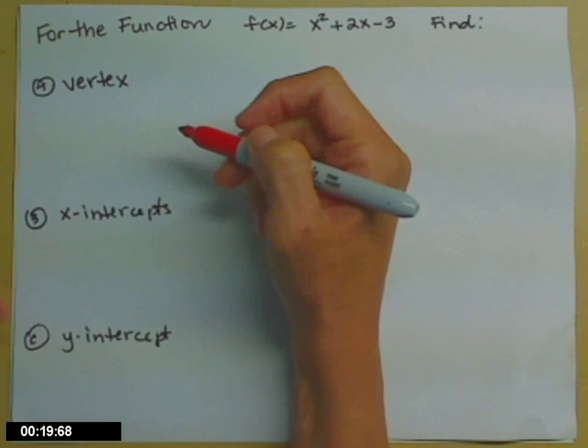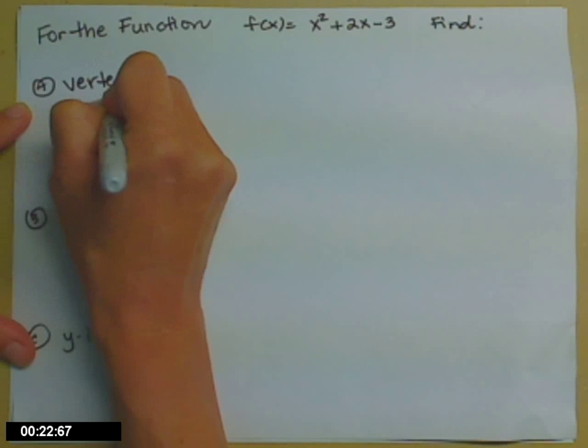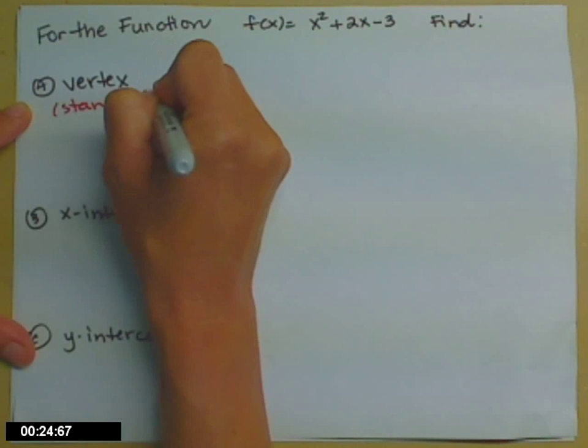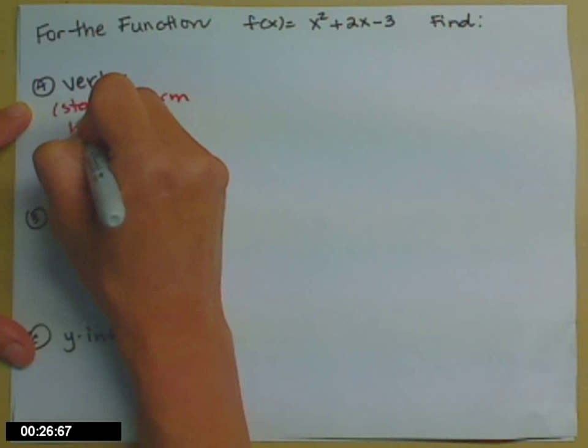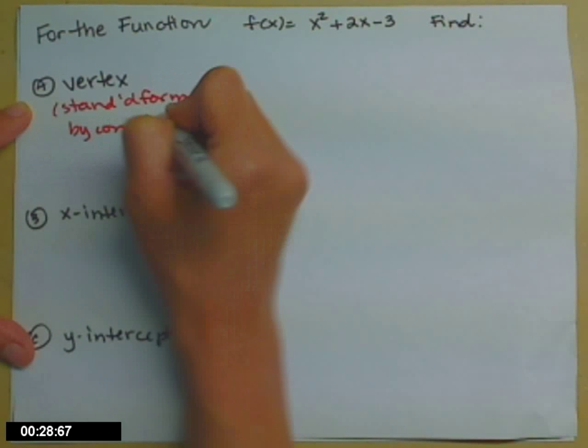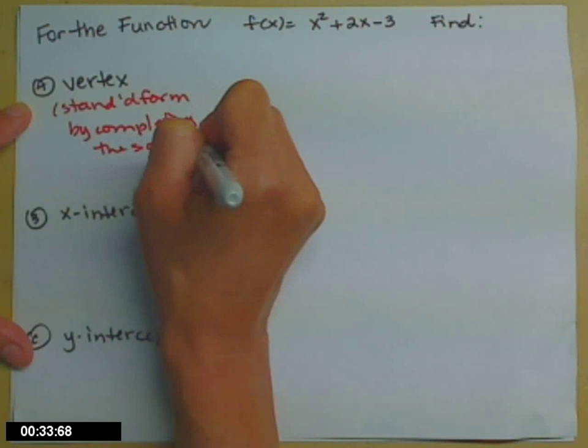So to find the vertex, we need to put it in standard form by completing the square. Completing the square. So go ahead and get started.